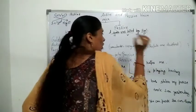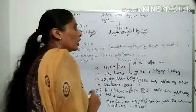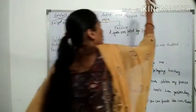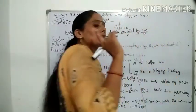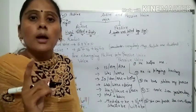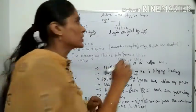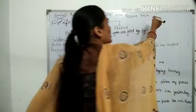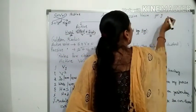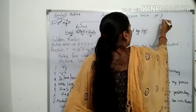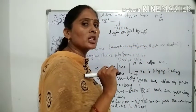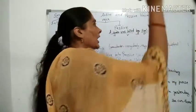He हमारा subject है, me हमारा object है — तो he और me हमारे pronouns हैं। Pronouns की एक table होती है जिसमें three persons होते हैं। First person है I और we — जब as a subject use करेंगे तो I और we होगा, लेकिन जब उनको object बनाएंगे तो वे change होते हैं।